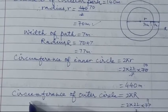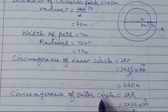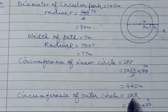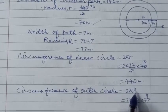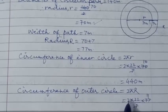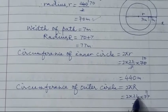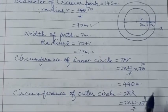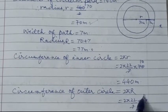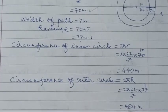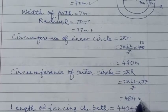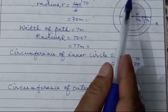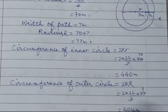Then we find the circumference of the outer circle using capital R. Circumference = 2πR = 2 × (22/7) × 77 = 484 meters. Both the inner and outer circumferences are now found.